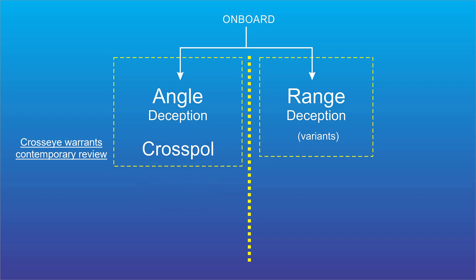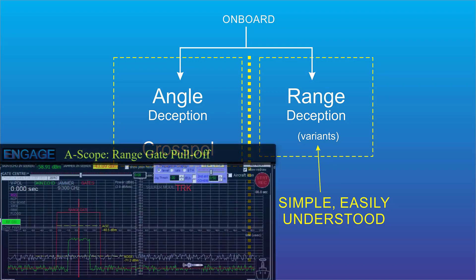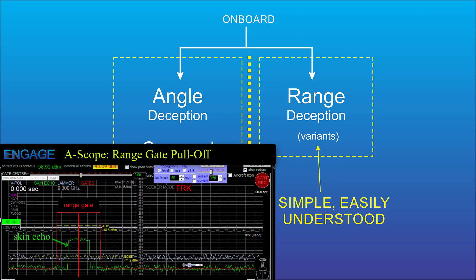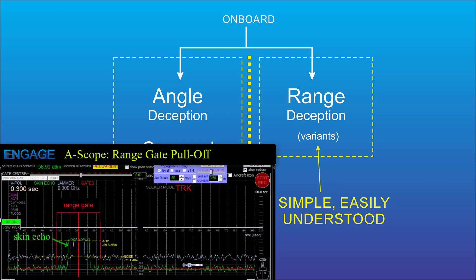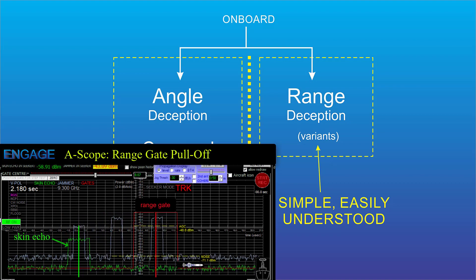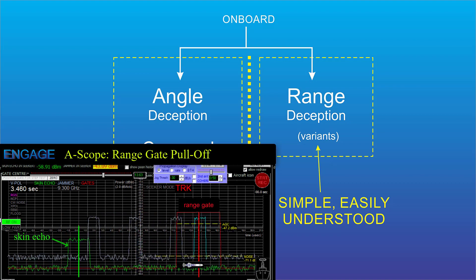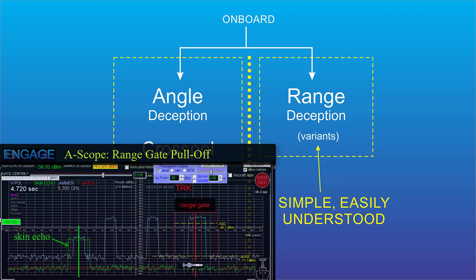On the other hand, range deception techniques were simple to explain and easily understood. All the jammer has to do is repeat the seeker's signal back to it and drag the range gate off the ship by applying a gradually increasing delay in the pulses that it sends back.